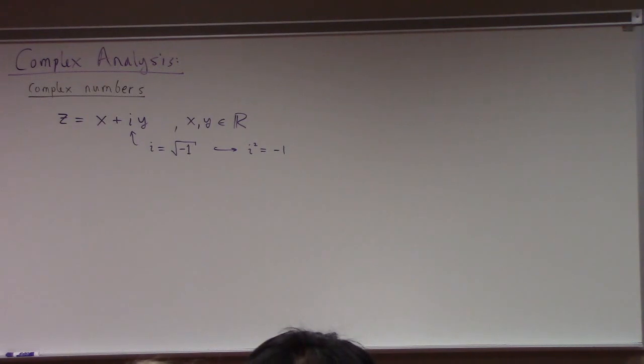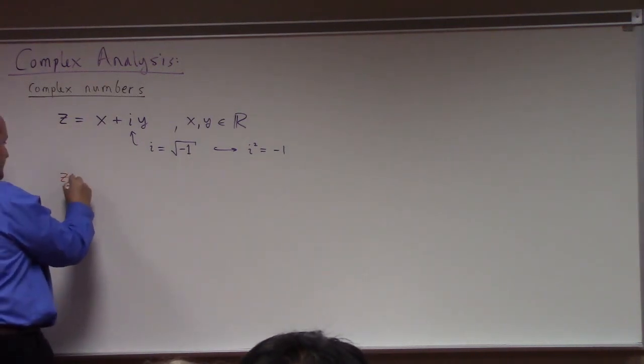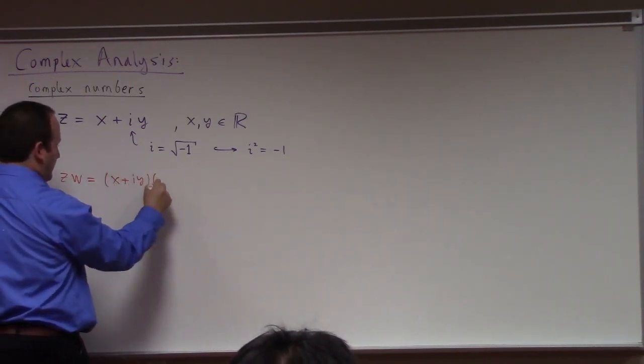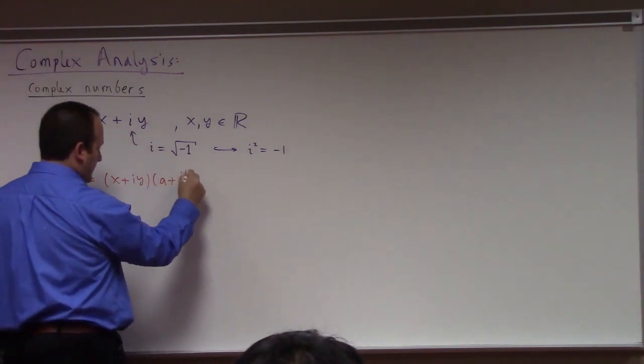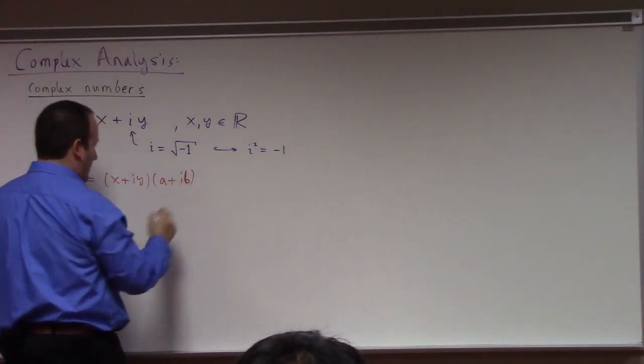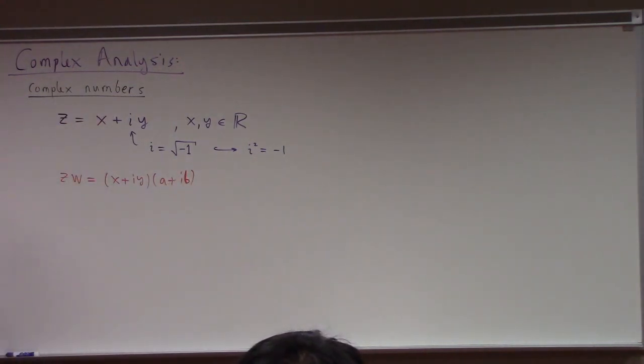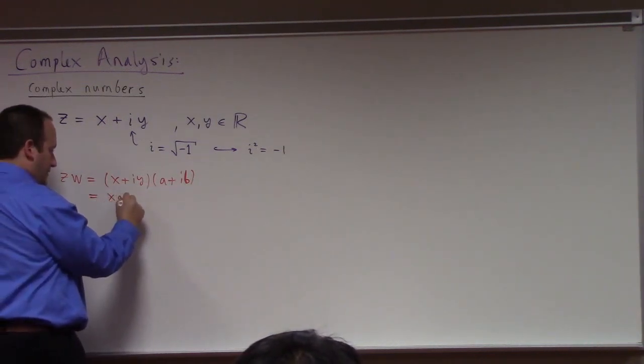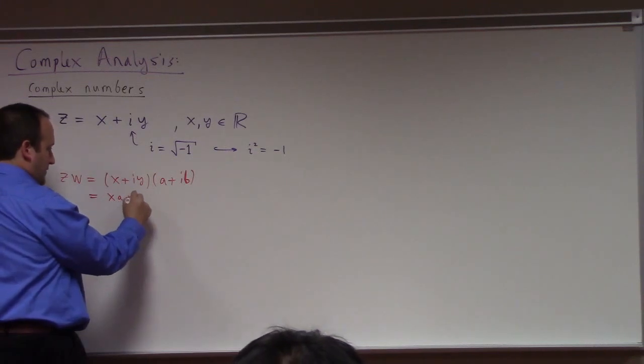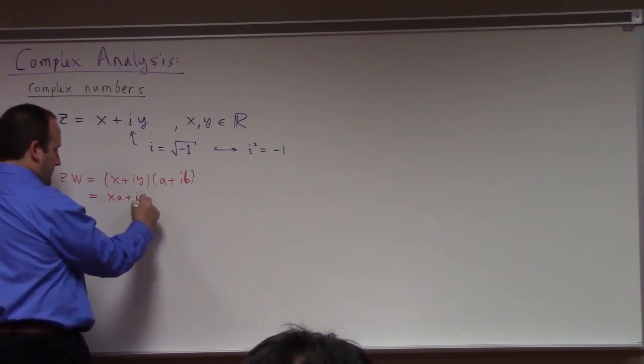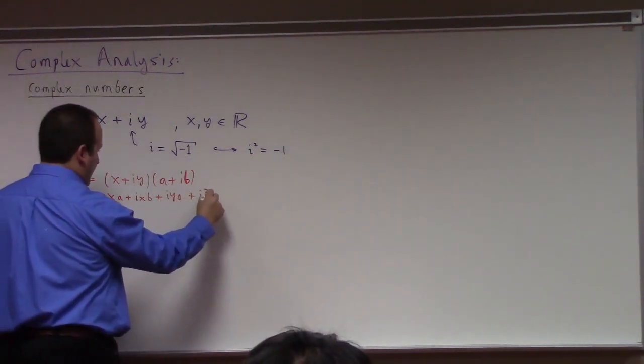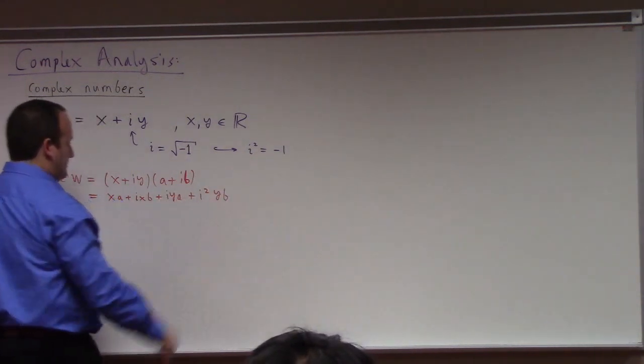But how do they work? So you have two of them, zw. Let's say z times w. And let's suppose z is x plus iy. And let's suppose w is a plus ib, right? And you multiply them. Well, basically just like normal, right? So you have xA plus ixb plus iya plus i squared times yb, right?